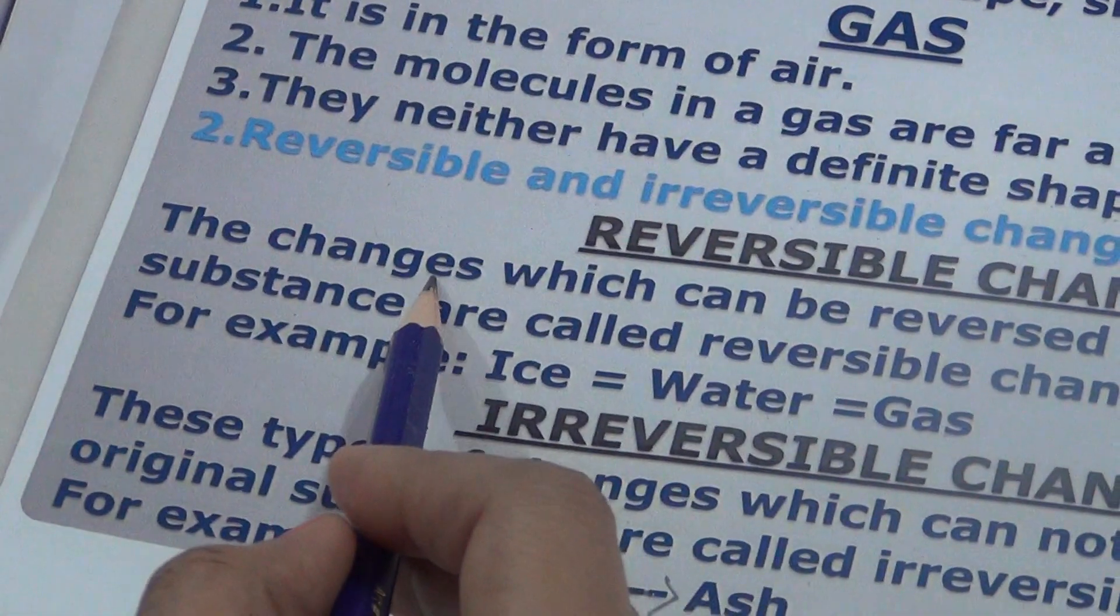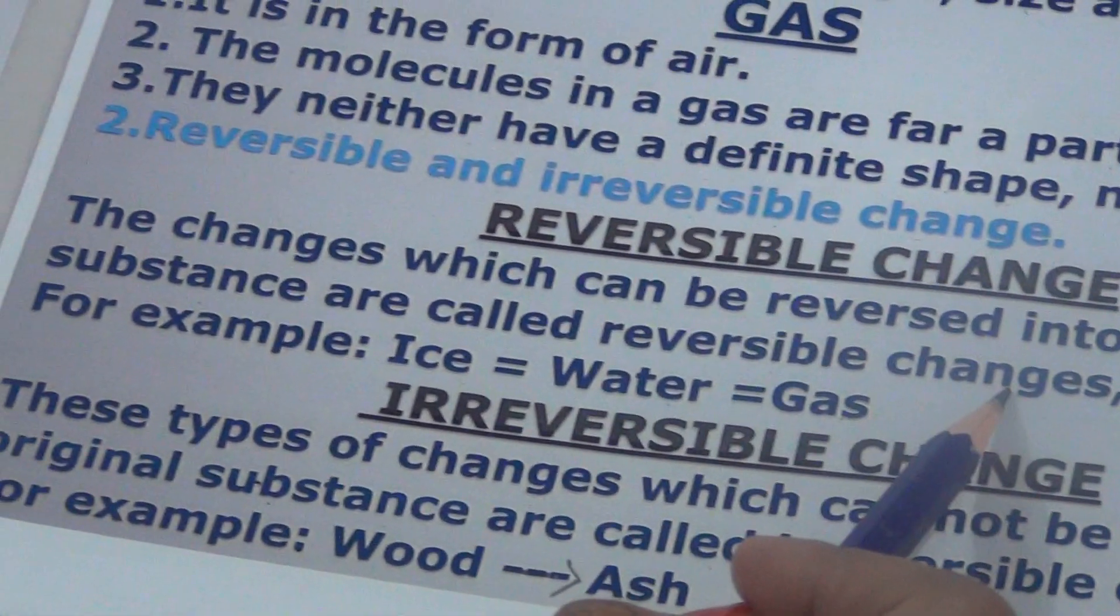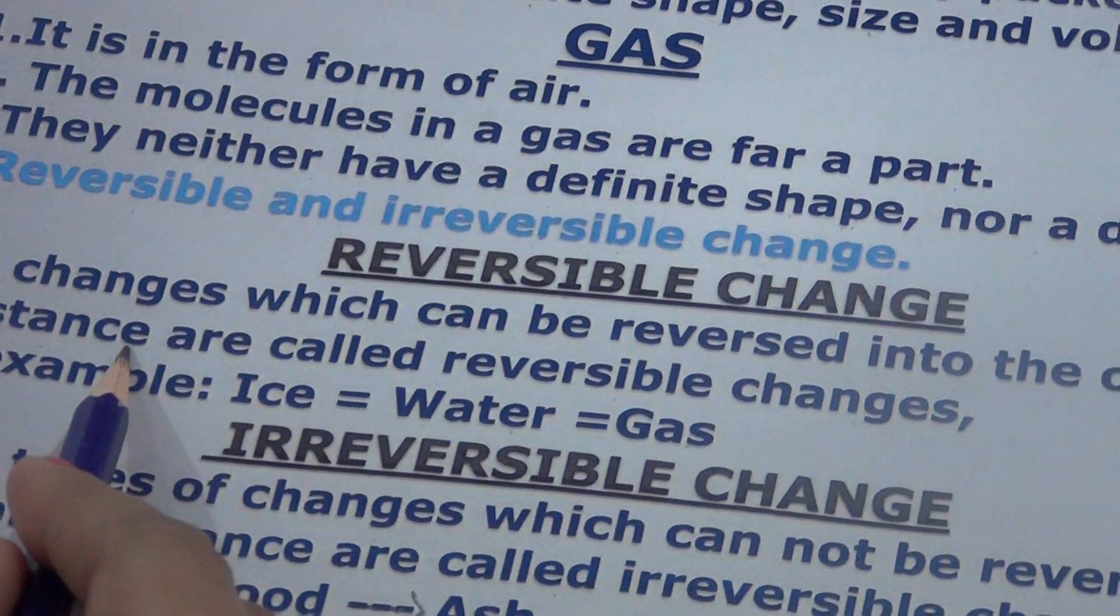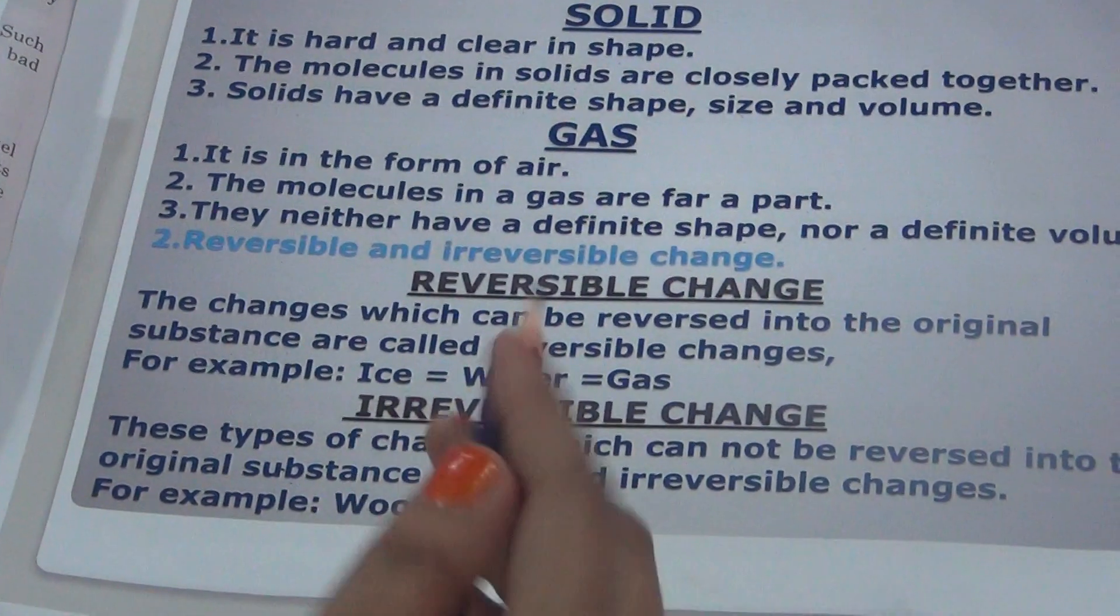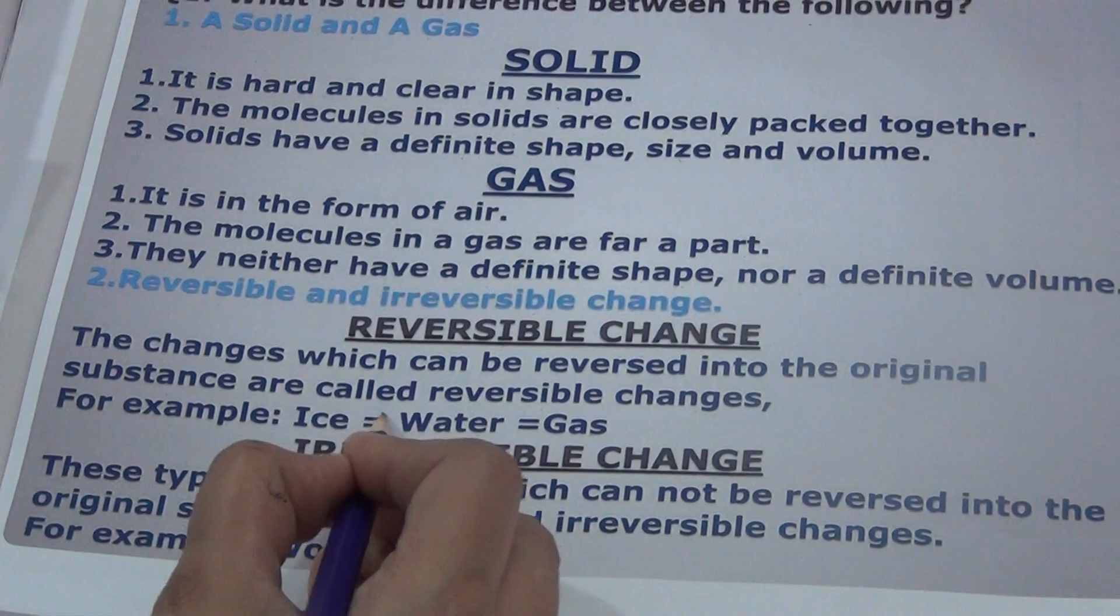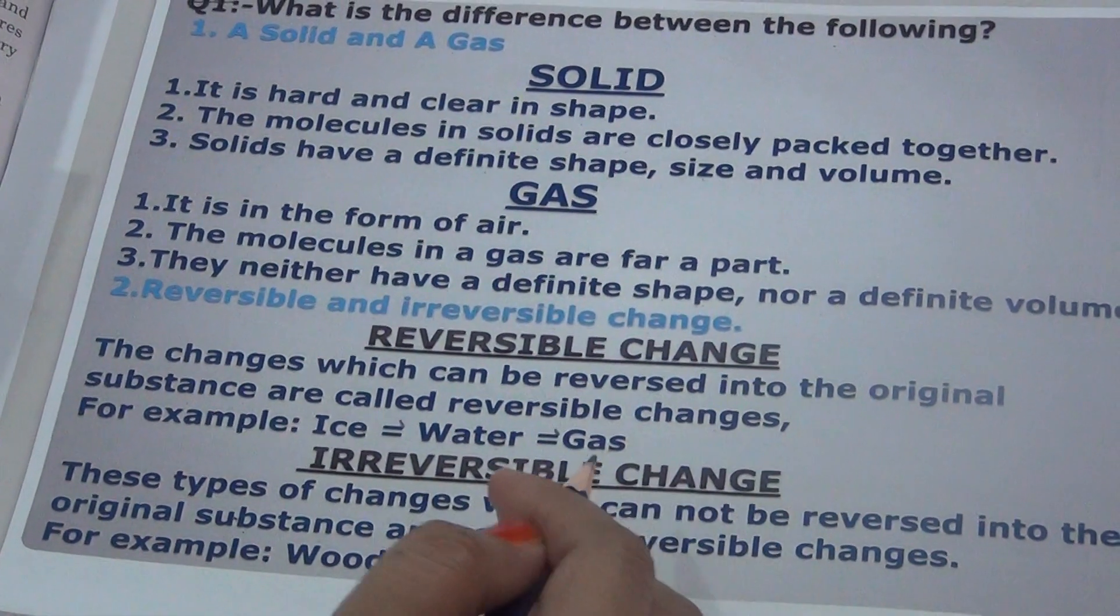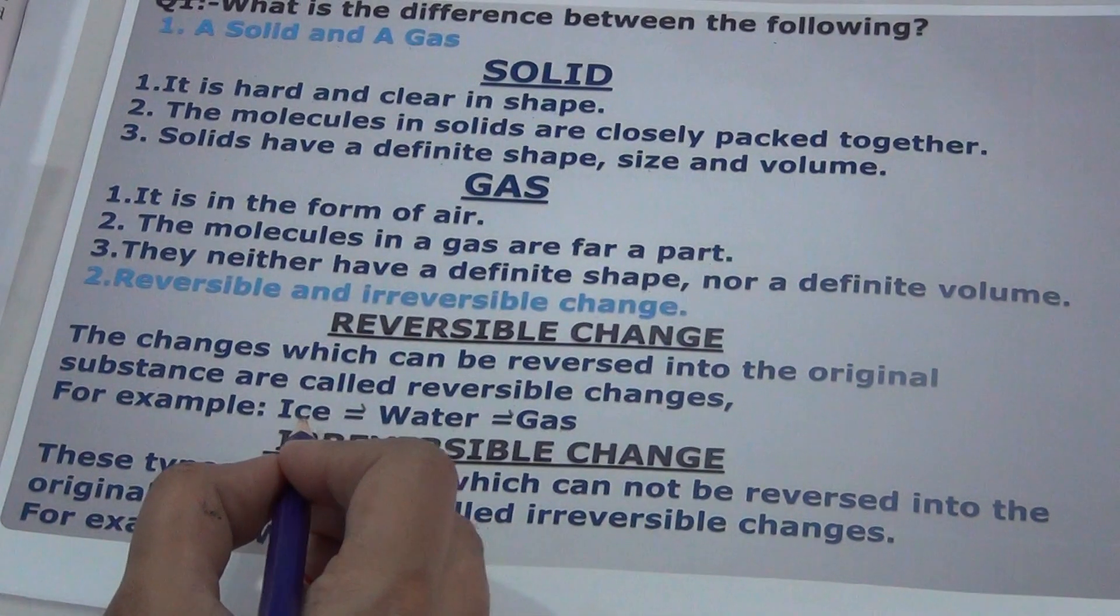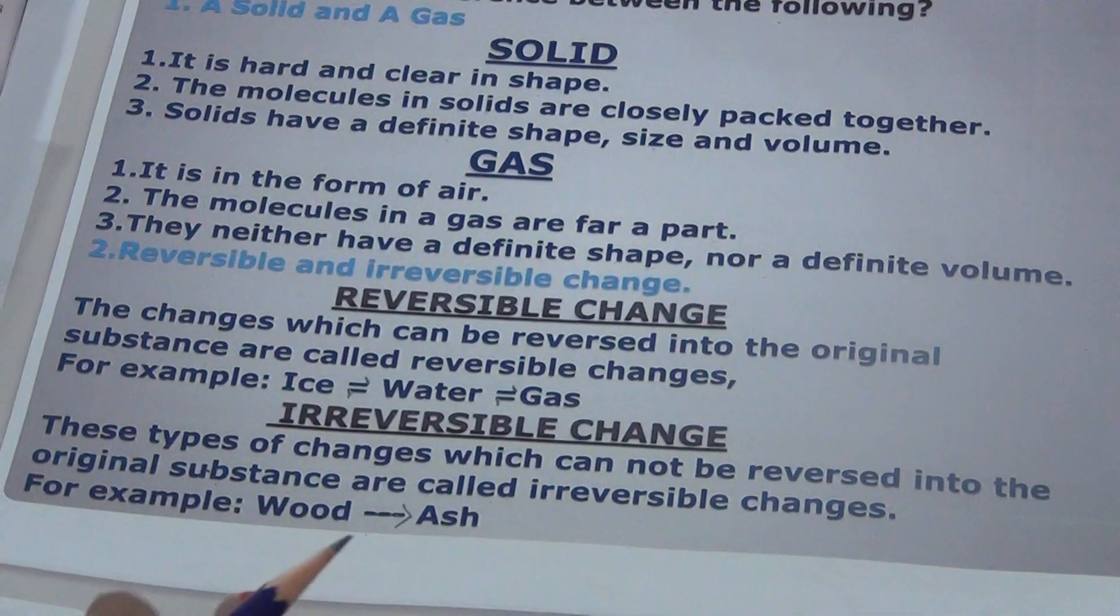Reversible change. The changes which can be reversed into the original substance are called reversible changes. For example, when you have ice, you can change it into water. It melts and changes to water, and after that it can change into gas. Similarly, we can reverse it. We can get ice back again. Gas can change to water, and water can change back to ice.